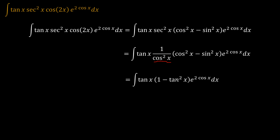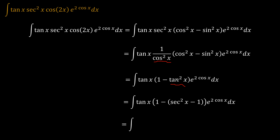Now tangent²(x) can be expressed as sec²(x) minus 1. So when we simplify things further, we have tan(x) times the bracket (2 minus sec²(x)) times e to the power cos(x).